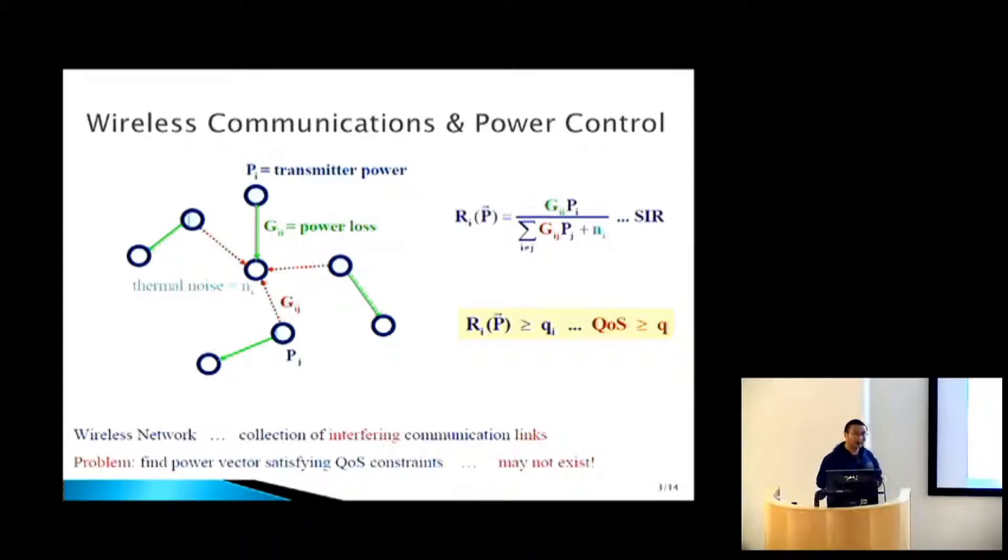In 1993, a seminal paper by Foschini showed a very simple and elegant distributed power update scheme that converges to the minimum power needed to satisfy those quality of service constraints. It also shows necessary sufficient conditions for when such solutions exist. Ever since then, there's been a long thread of research adding bells and whistles, looking at throughput and backlog.